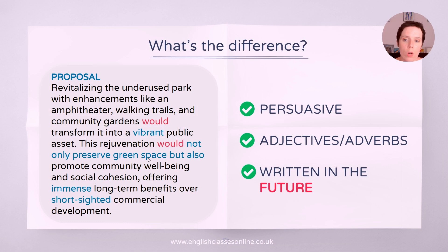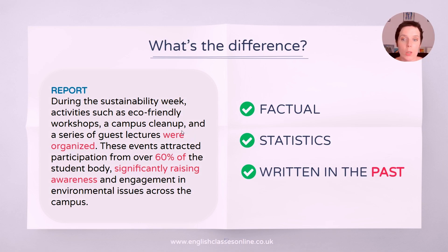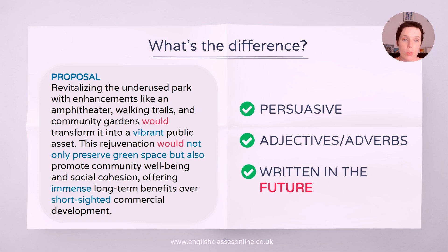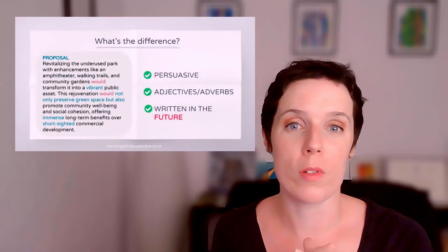For example, here: "this rejuvenation would not only preserve green space, but also promote community wellbeing." So "would" — we're using the future, hypothetical. Same here: "walking trails, community gardens would transform it" — hypothetical. Whereas if we go back to our report, you can see "they were organised," "they attracted participation." So your report is in the past, proposals are in the future. That's your main difference between the two.